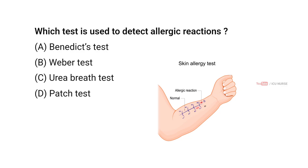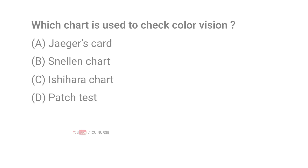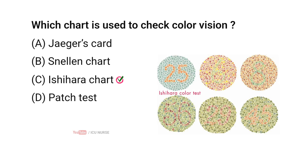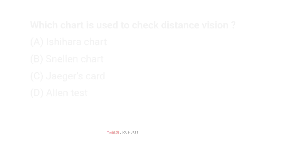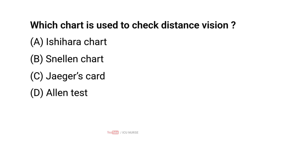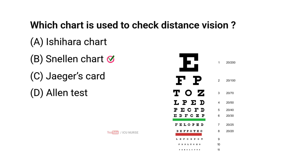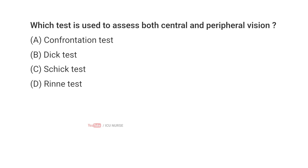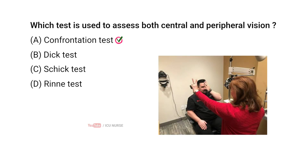Which test is used to detect allergic reactions? Correct answer D: Patch test. Which chart is used to check color vision? Correct answer C: Ishihara chart. Which chart is used to check distance vision? Correct answer B: Snellen chart. Which test is used to assess both central and peripheral vision? Correct answer A: Confrontation test.